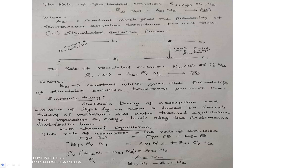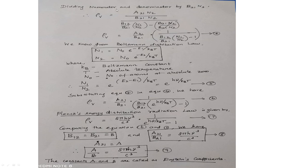Dividing numerator and denominator by B21·N2, the expression simplifies. The numerator becomes A21/B21, and the denominator becomes (B12/B21)·(N1/N2) − 1. So ρ(ν) = (A21/B21) / [(B12/B21)·(N1/N2) − 1]. This is equation number 4.